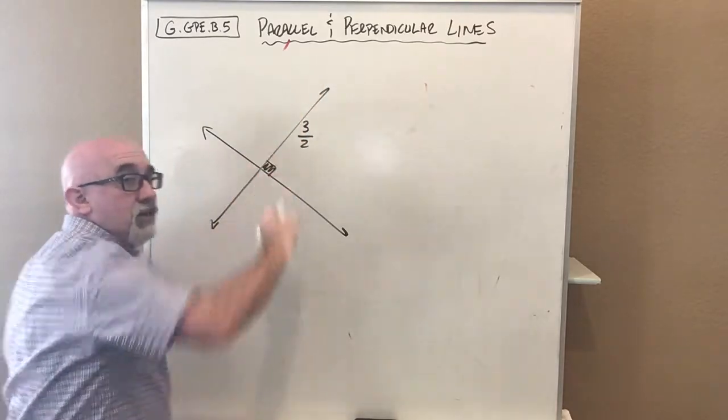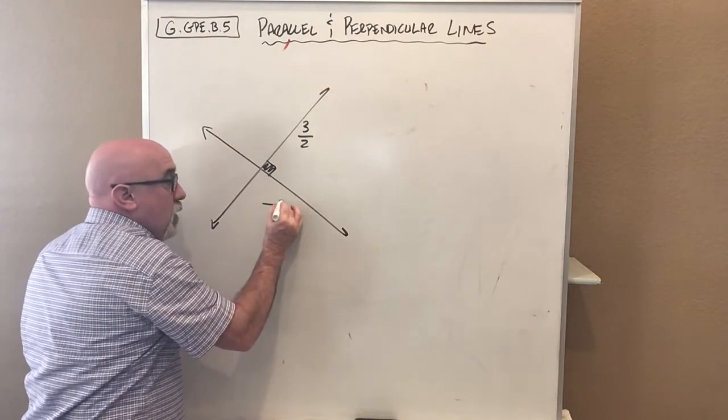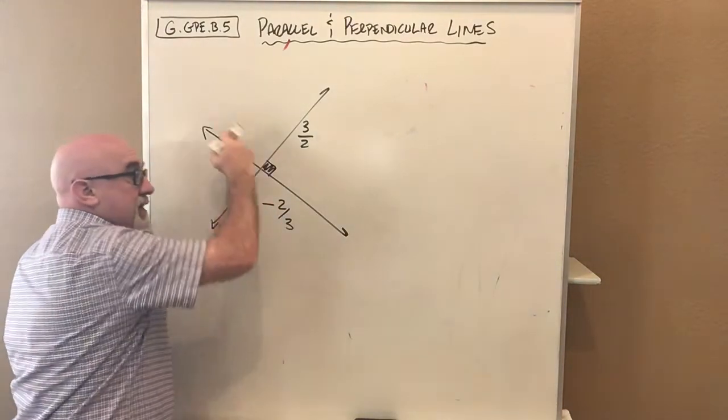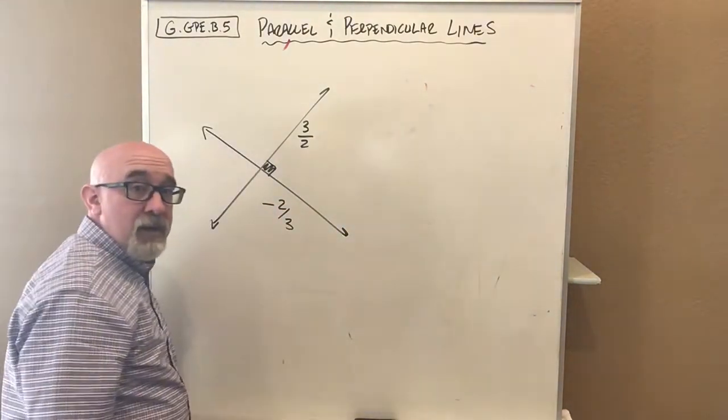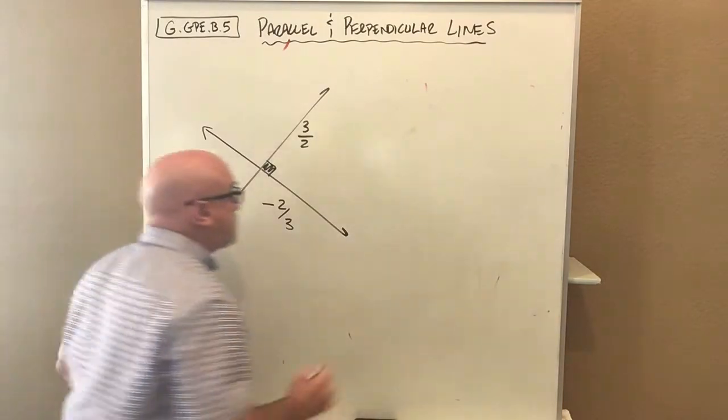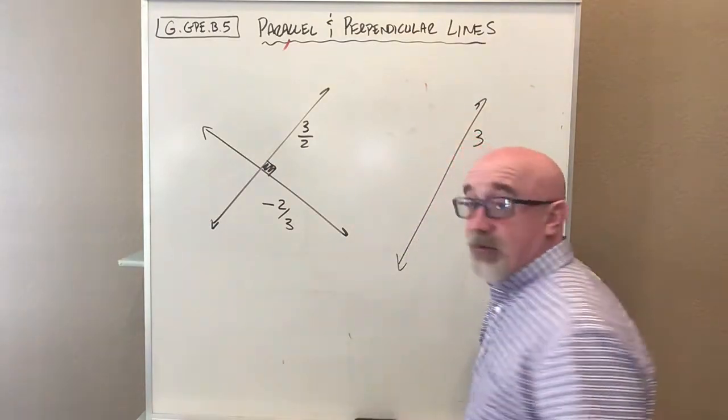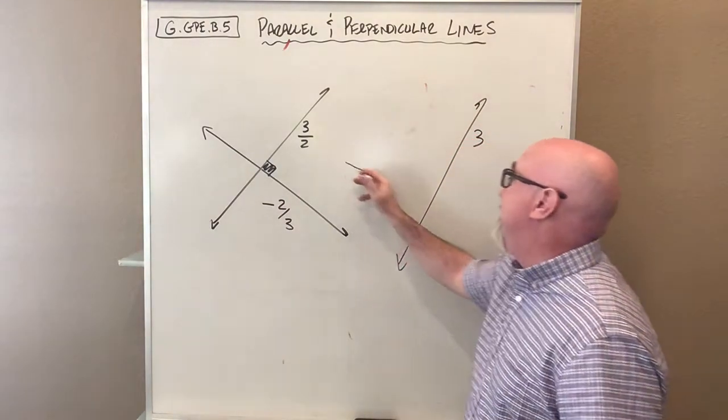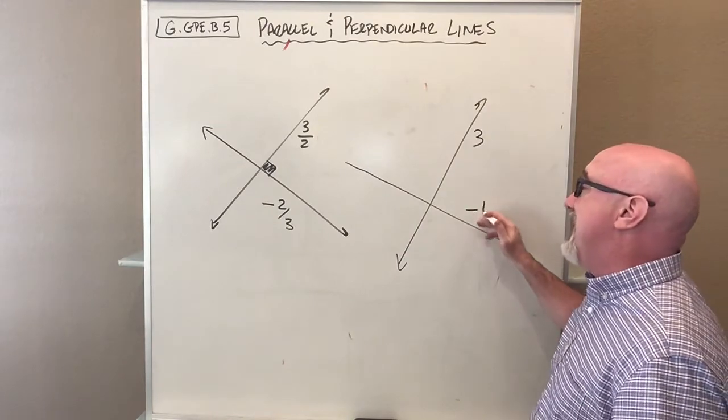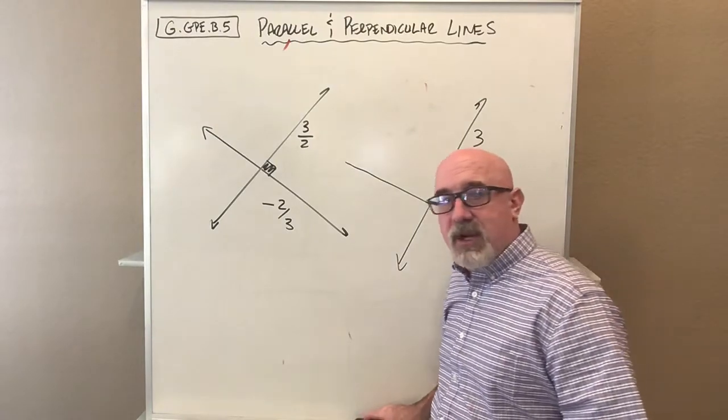To be perpendicular, you would have to be a negative reciprocal. This would be negative 2/3, and that creates perfectly that 90 degree angle. If we had a line like this with slope 3, the perpendicular slope would be negative 1/3. These are negative reciprocals of each other.